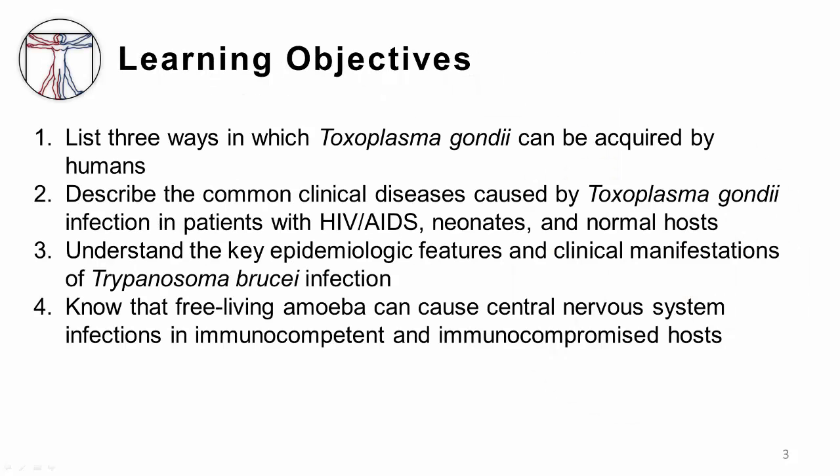Our learning objectives for this session are: one, list three ways in which Toxoplasma gondii can be acquired in humans; two, describe the common clinical diseases caused by Toxoplasma gondii infection in patients with HIV-AIDS, neonates, and normal hosts; three, understand the key epidemiological features and clinical manifestations of Trypanosoma brucii infection, which causes African trypanosomiasis; four, know that free-living amoeba can cause central nervous system infections in immunocompetent and immunocompromised hosts.